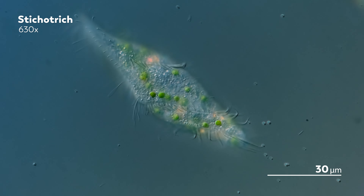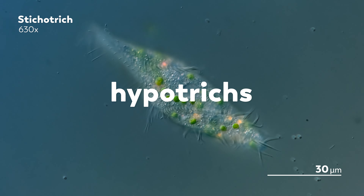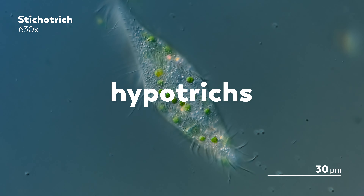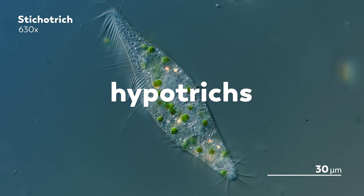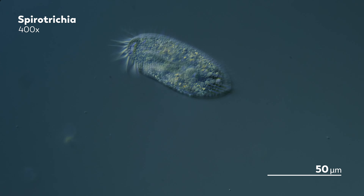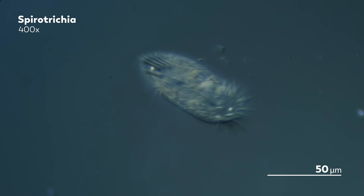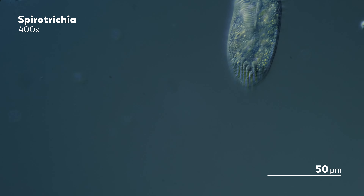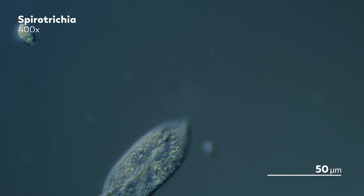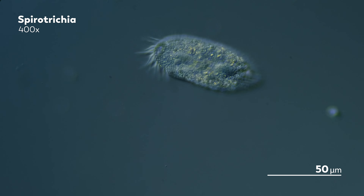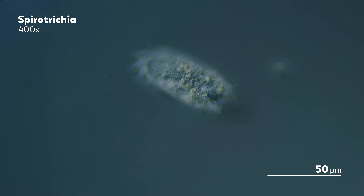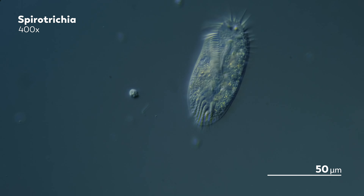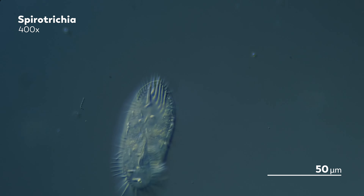These are a subclass of ciliates called hypotrichs. You might recognize that name because it's shown up as a label on our channel before, and perhaps you've wondered what exactly that means. Hypotrichs sounds quite cool, but it's not really a super helpful label if you don't know what a hypotrichs actually is. And that is why we're here today. But just so you know, it's not a very specific label — it does not tell us a whole lot about what species of organisms we're looking at.